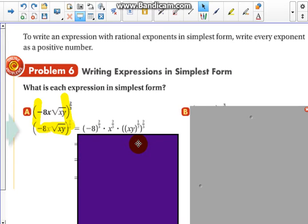So let's take a peek at that. And there it is distributed to all three terms. So there's the negative 8 to the two-thirds, the x to the two-thirds, and the radical xy. But notice what they did with the radical xy: they turned the radical xy to the one-half power, then to the two-thirds. So that was just a little conversion there.